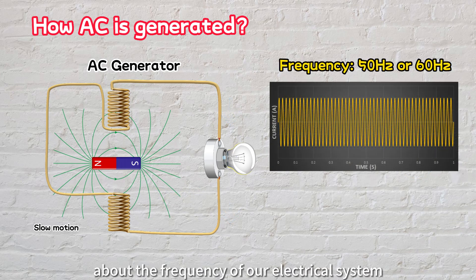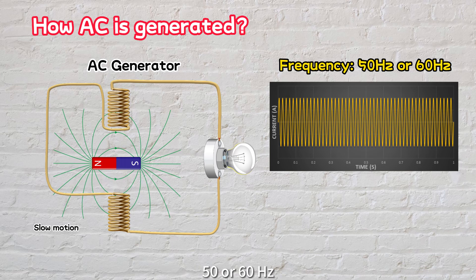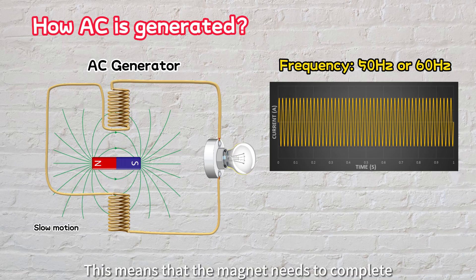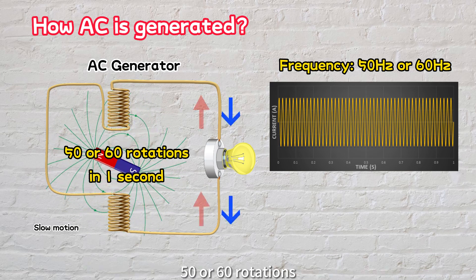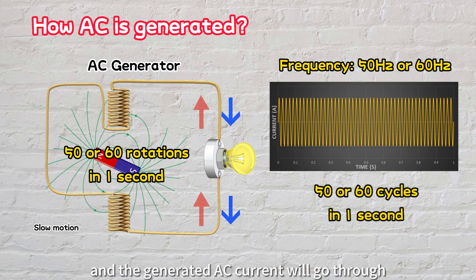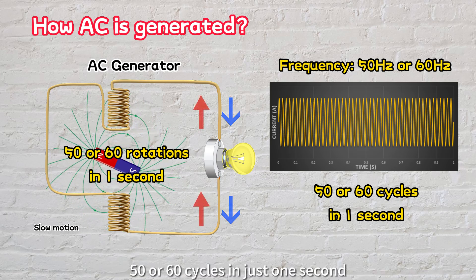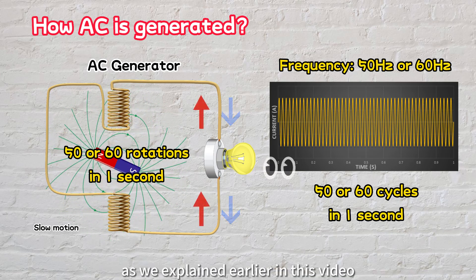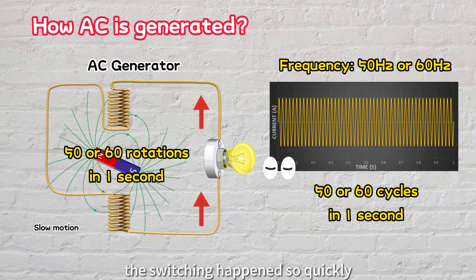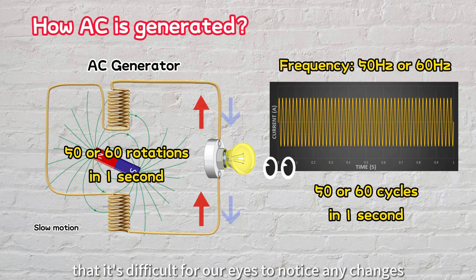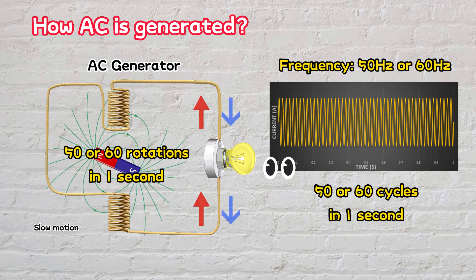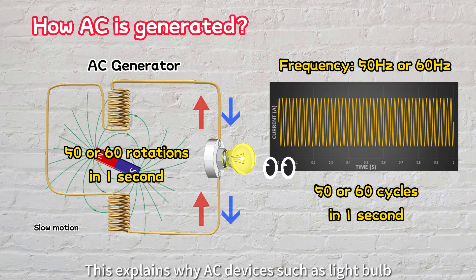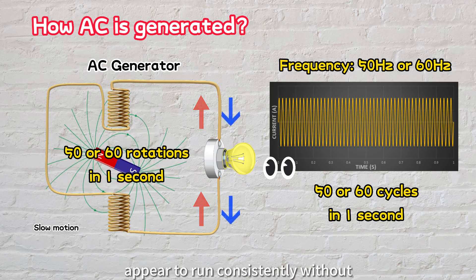Remember that we talked about the frequency of our electrical system, which is typically set at 50 or 60 Hz. This means that the magnet needs to complete 50 or 60 rotations, and the generated AC current will go through 50 or 60 cycles in just 1 second. As we explained earlier, the switching happens so quickly that it's difficult for our eyes to notice any changes, which explains why AC devices such as light bulbs appear to run consistently without any visible flickering.